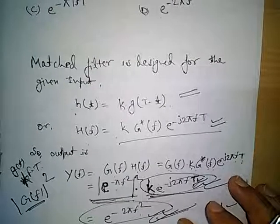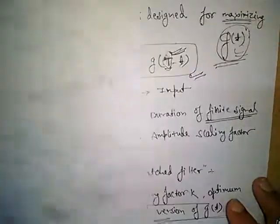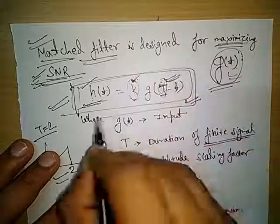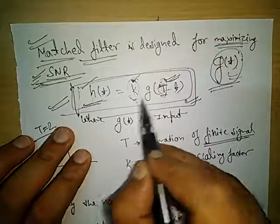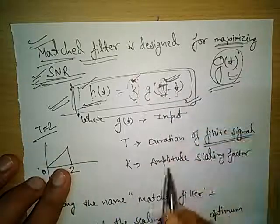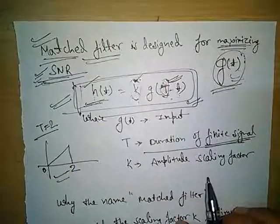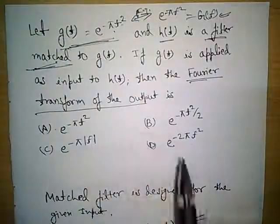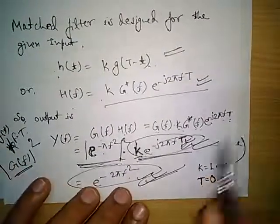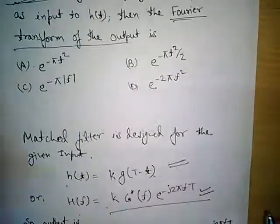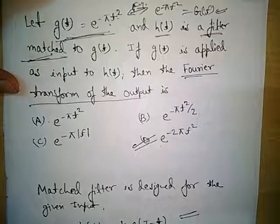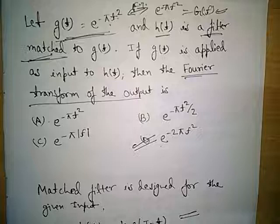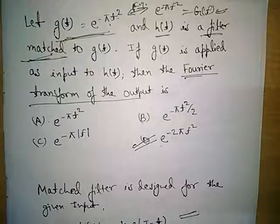So overall, the Fourier transform of the output of the matched filter is the result we obtained. This was the very basic concept of the matched filter. The key function to remember is that the impulse response of the matched filter is h(t) = k·g(T - t), where T is the duration of the finite signal. Here we took T = 0 to match the options, and that function also matches the input signal, so option D is correct. I hope I have explained the matched filter well, and in coming videos I will cover other concepts. Thank you for watching.